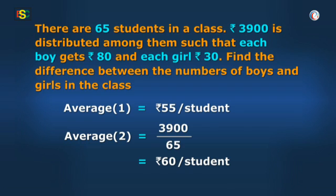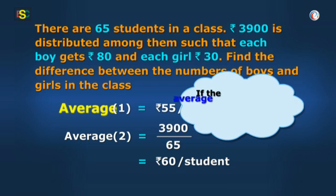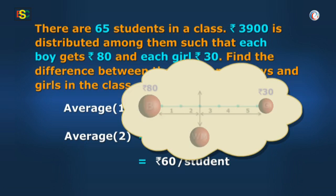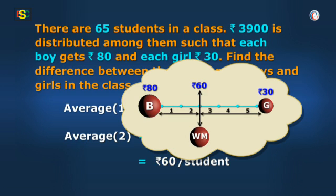Now, focus Vidya. If the average were 55, it would be exactly between 80 and 30. But the average is coming out to be 60. Clearly, there must be a larger number of boys in the class since the given weighted mean, i.e. 60, is nearer to 80 compared to 30.